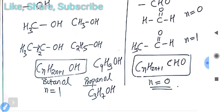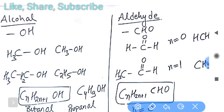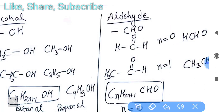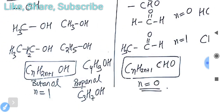Now, aldehyde: it is represented as CHO, or as COOH for carboxylic acid. For aldehyde, you write CHO, and you have to put n equal to 0 in their general formula CₙH₂ₙ. When you put n equal to 0, you get CHO. You will understand better when we talk about the IUPAC name.